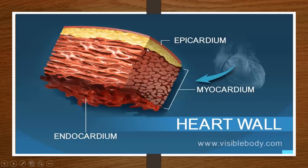Remember back in previous chapters when we talked about the heart wall — the inner layer of the endocardium, the myocardium, and the epicardium. This middle layer, the myocardium, is usually what is affected by the heart attack. If a person has a STEMI, that STEMI affects the whole middle myocardial layer.